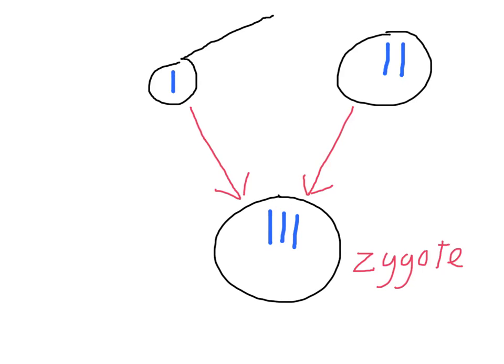Now this individual or this cell down here that has three versions of a particular chromosome is called trisomy. And we can also imagine what might happen if instead of the egg cell here having two versions of the chromosome, if it had none, the resulting zygote, instead of having its normal two versions, might just have one version. And that can cause a whole lot of genetic diseases as well.